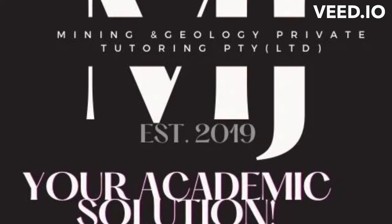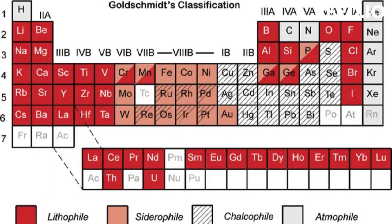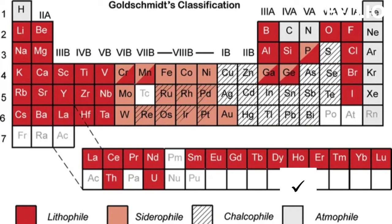In today's lesson, we are going to learn more about Goldschmidt classification of elements. Goldschmidt created four classifications for the elements based on their associations with iron, silica, and sulfur — the three main environments available to them in the early Earth. These elements are Lithophile, Siderophile, Chalcophile, and Atmophile.